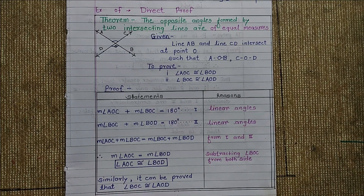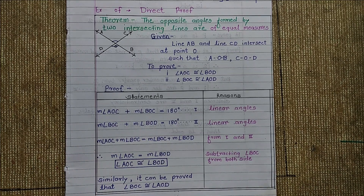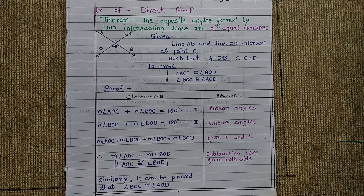You already know that there are two types of proofs: direct proof and indirect proof. Now we have one theorem that we have to do.